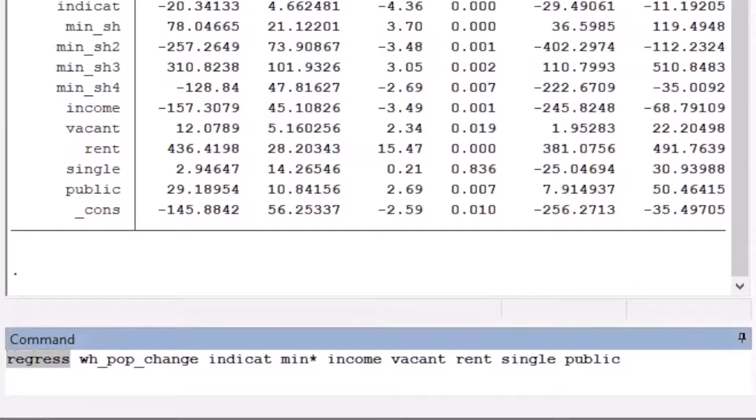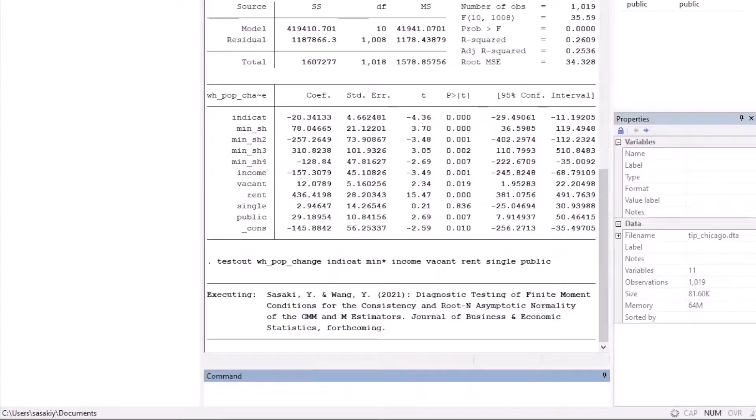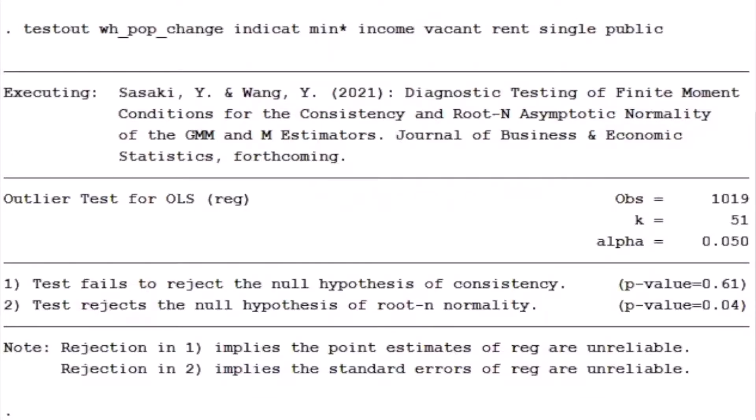We replace the regress command by the testout command. The test results again indicate that the point estimates are credible, but the standard errors are not.